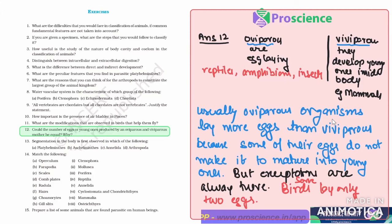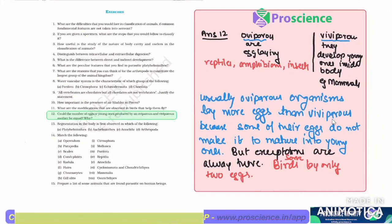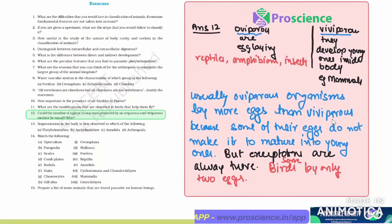Also, viviparous - since in viviparous organisms the development takes place internally, so there is not enough space for many young ones.